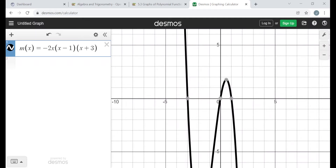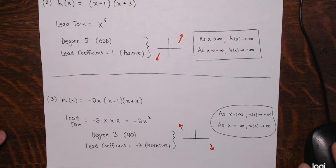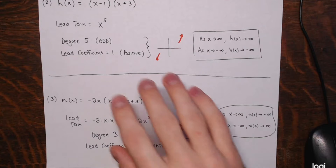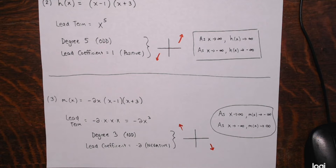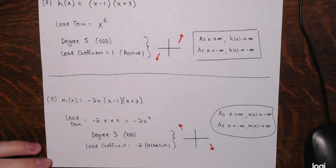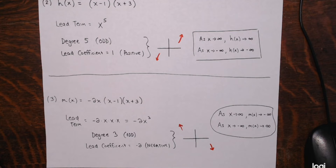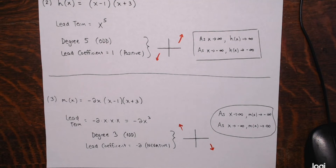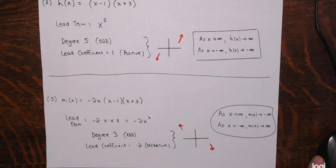And that is all I have for you. Please understand that all three examples ended up being odd degree polynomials — you may come across even degree polynomials. Just go back to that table to see what the end behavior would be like. I'm hoping that watching me go through these examples helps you when you're asked to identify and describe the end behavior of a polynomial function yourself. Thank you very much for watching.